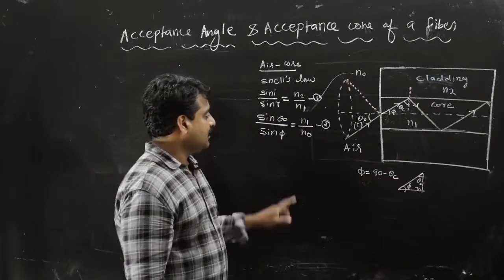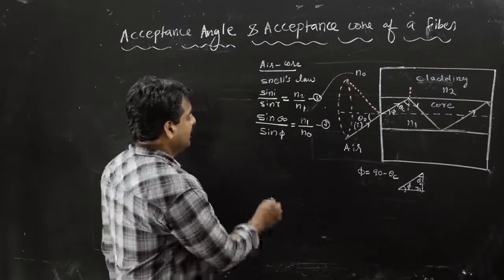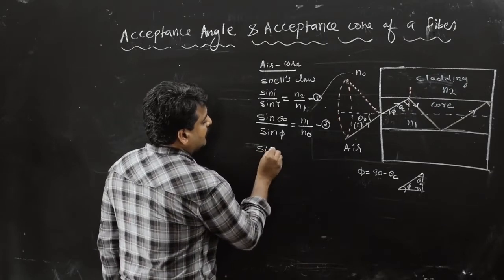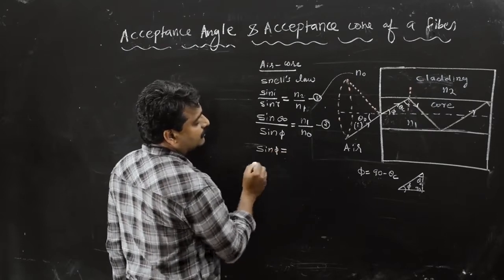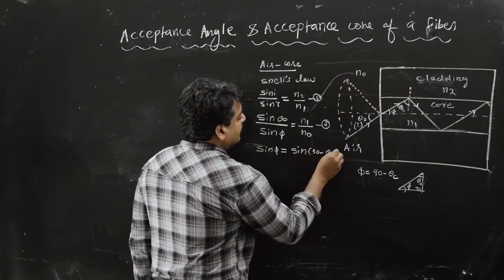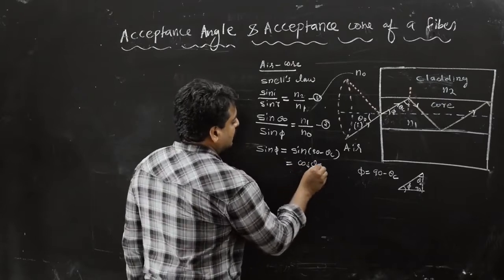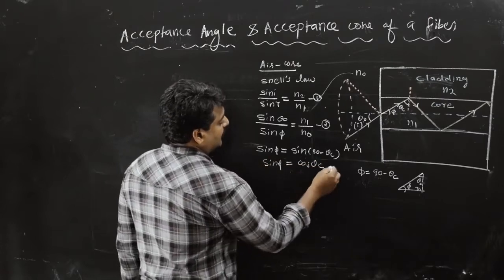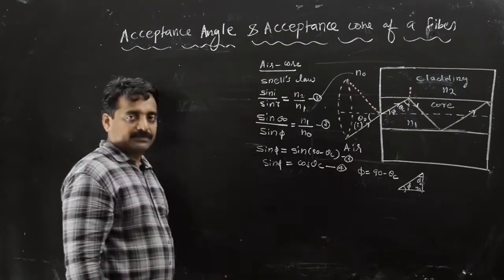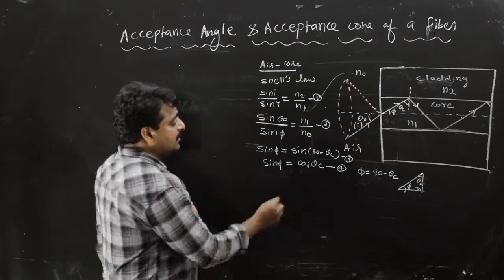After this, sin phi equals sin(90 minus theta c). We know that sin(90 minus theta c) equals cos theta c. So sin phi equals cos theta c. This is equation number 3, and sin phi equals cos theta c is equation number 4.